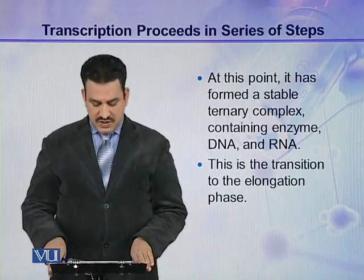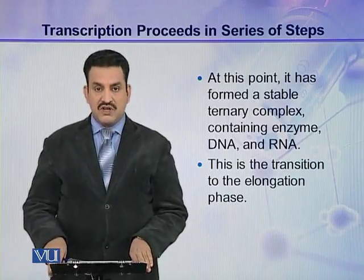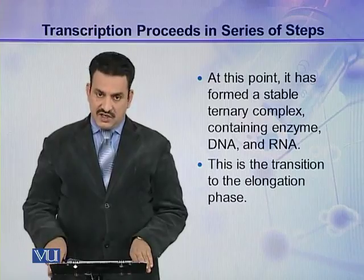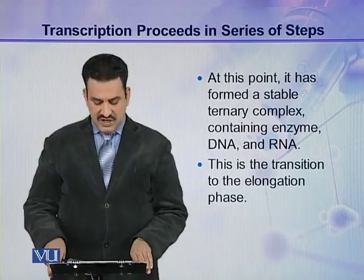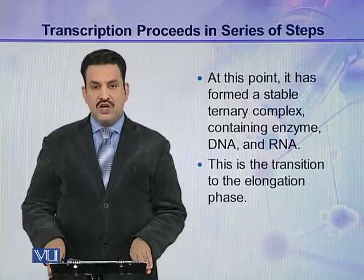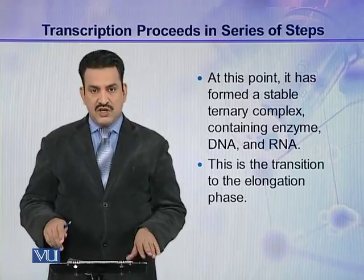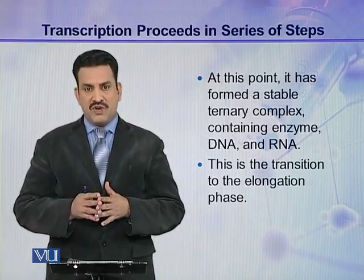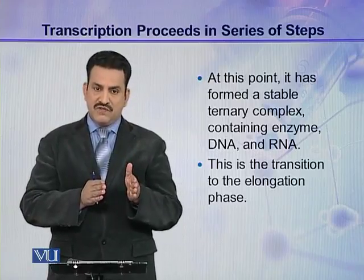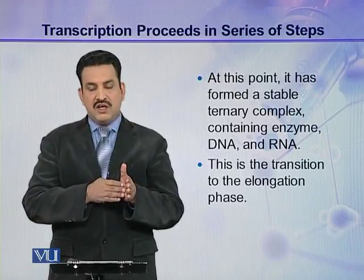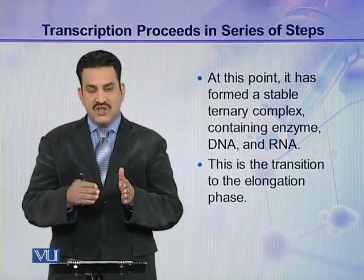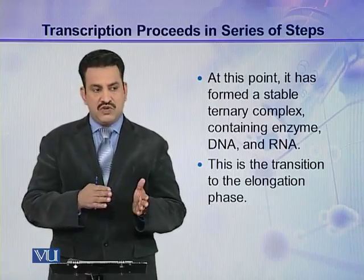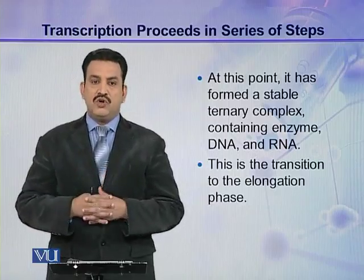At this point, a stable ternary complex has formed, which includes the enzyme, DNA, and RNA. This is the transition to the elongation phase. The formation of this ternary complex marks the end of the initiation phase, and from here the process enters the elongation phase.